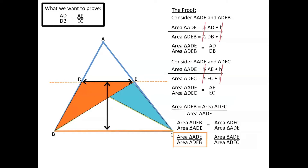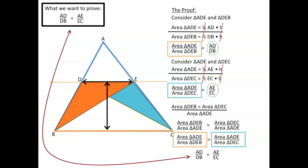It might not be obvious why we did that, but notice that the left side of the equation equals AD over DB, as we showed earlier, and the right side equals AE over EC, as we also showed. So now we have the proportion AD over DB equals AE over EC, which is exactly what we wanted to prove. We've shown that the Basic Proportionality Theorem is true — it's a very helpful proof, especially when working with more rigorous proofs, so it's important to know and understand why it works this way.